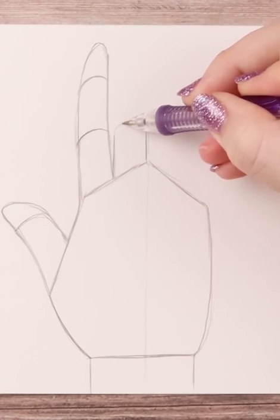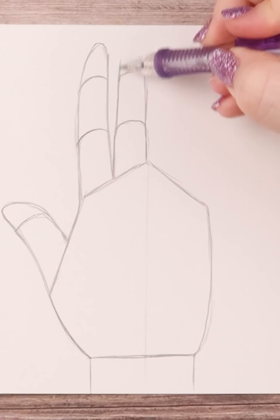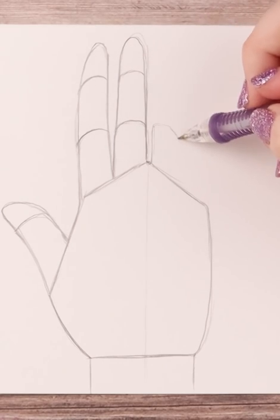Once I finish drawing out that shape, I add in the fingers starting with the thumb and then the index finger and so on.